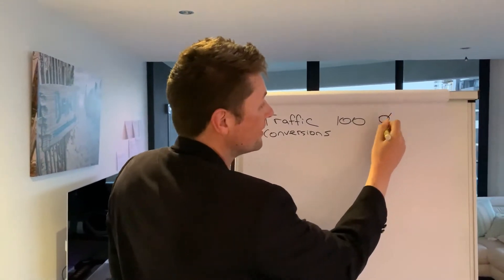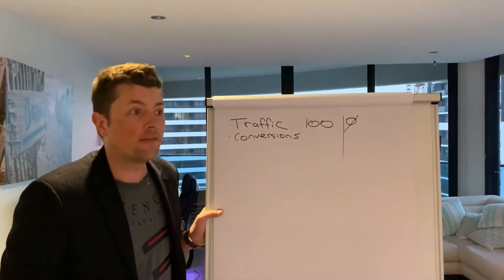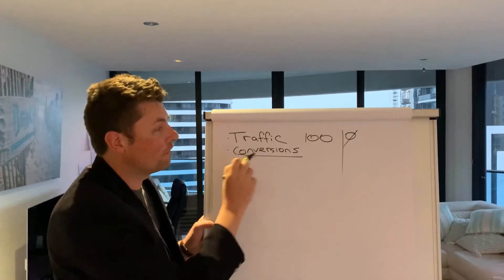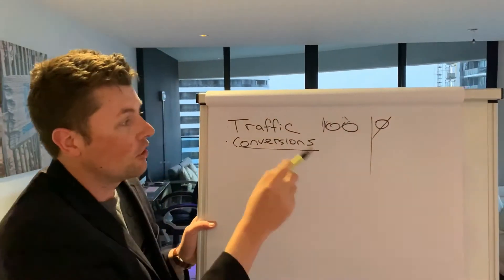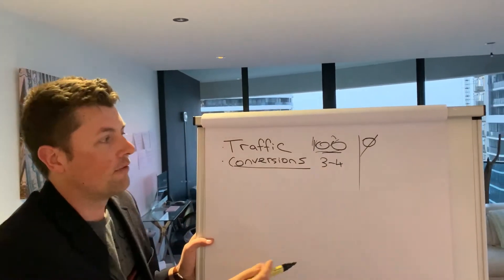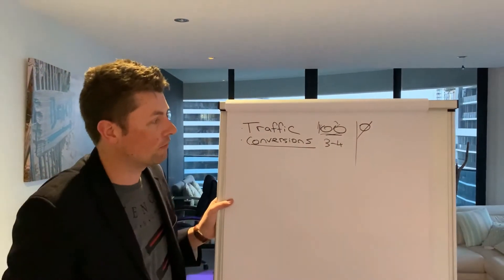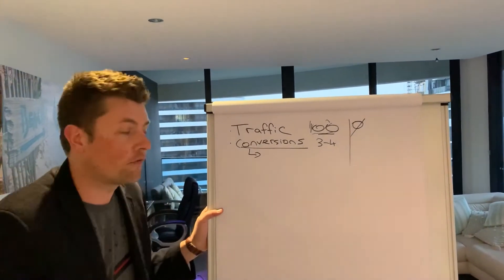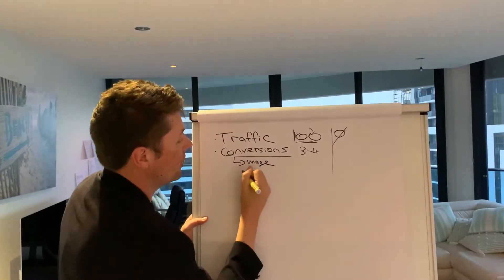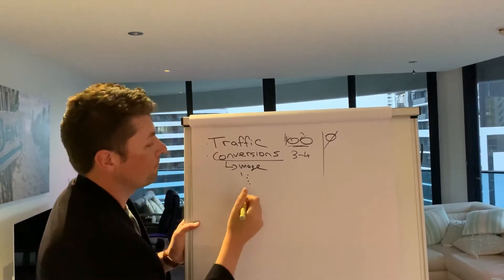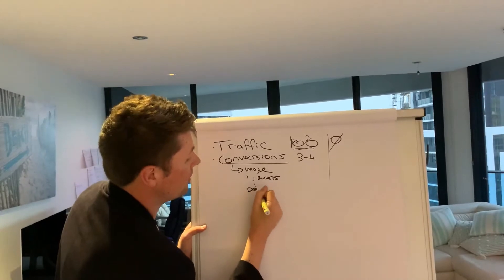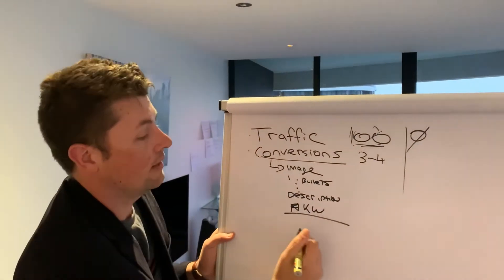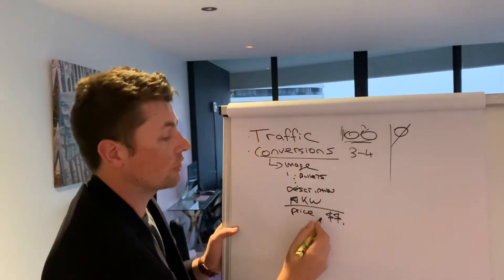If you've got zero people visiting, then you've got a traffic problem. For conversions — let's say you're getting a hundred people visiting your listing and you're only getting three or four sales. That's a conversion rate of three or four percent, and it means you need to improve something. It could be your images, your bullet points, your description, your keywords, or your price.